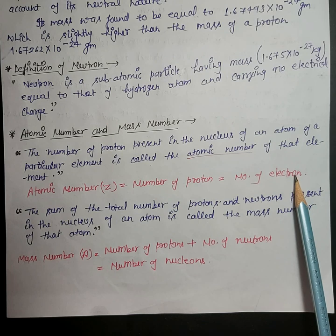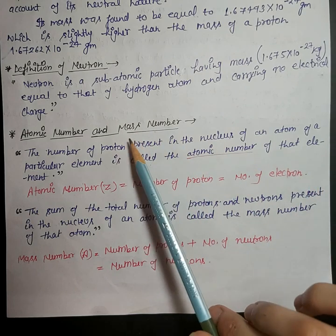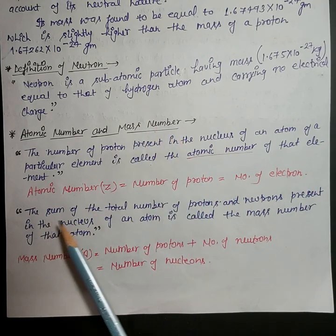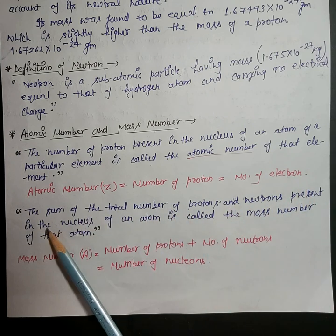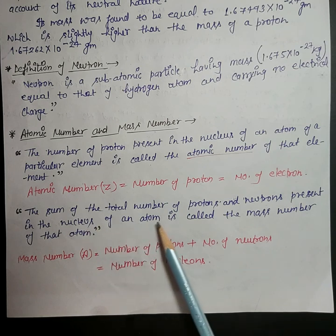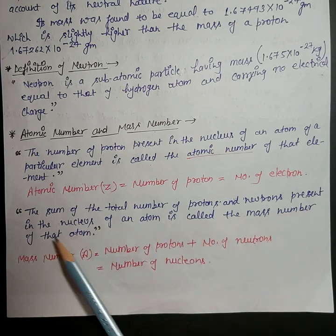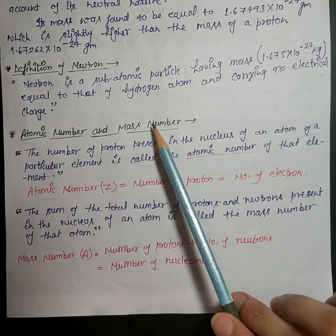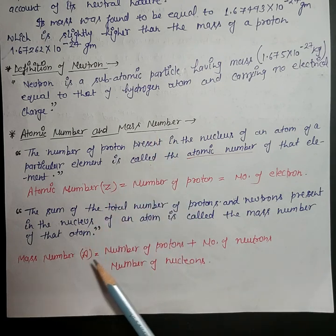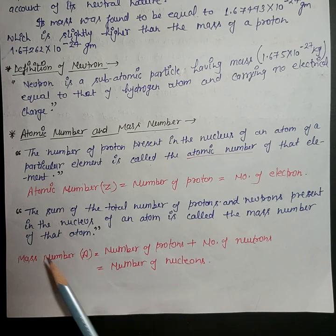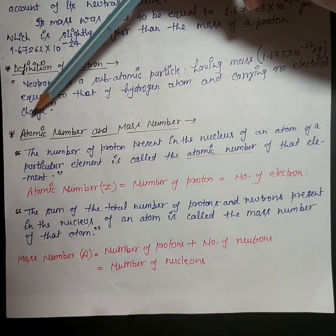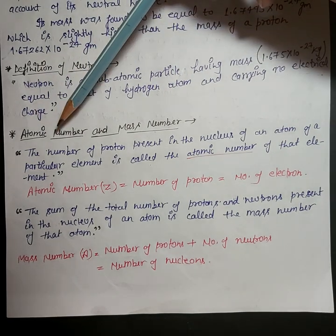Next is mass number. The sum of the total number of protons and neutrons present in the nucleus of an atom is called the mass number of that atom. It is represented by capital A. So mass number A equals number of protons plus number of neutrons. Collectively, protons and neutrons are known as nucleons, so we can also say mass number A equals the number of nucleons.